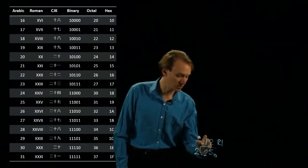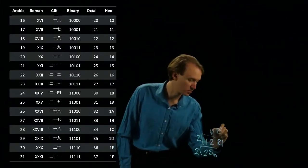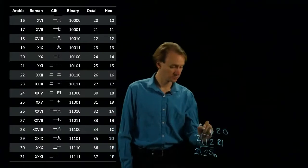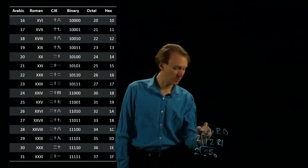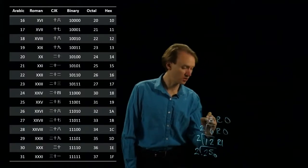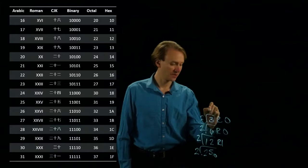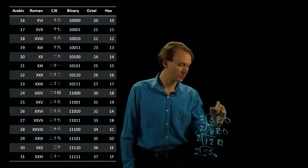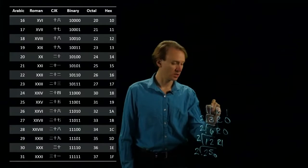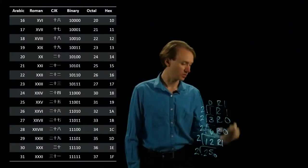Then I will take the 12, divide by 2, gives me 6 remainder 0. 6 divided by 2 is 3 remainder 0. 3 divided by 2 gives me 1 remainder 1. And then 1 divided by 2 gives me 0 remainder 1.